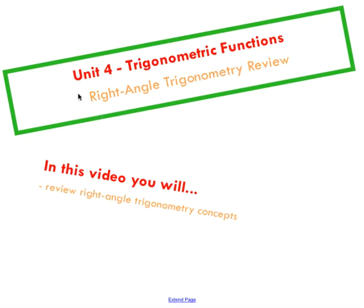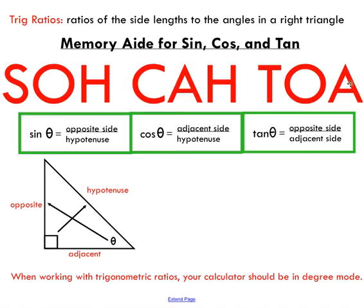Hi there, welcome to a video tutorial here on right angle trigonometry. We're going to look at three trig ratios in this video. First of all, a trig ratio is a ratio of the side lengths to the angles in a right triangle.